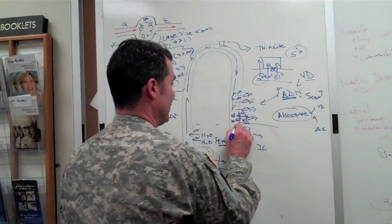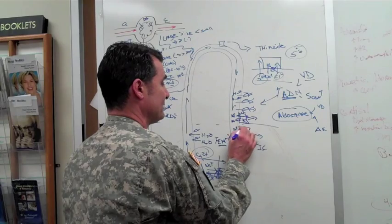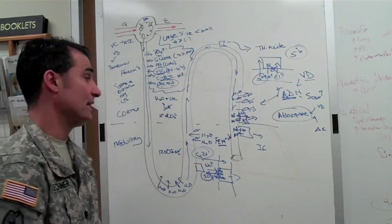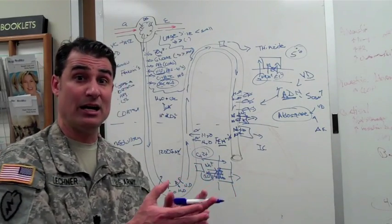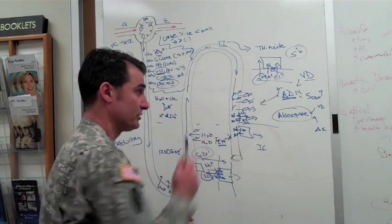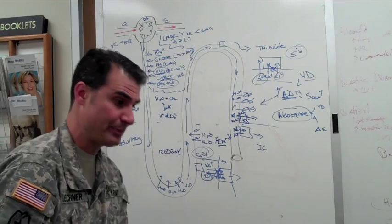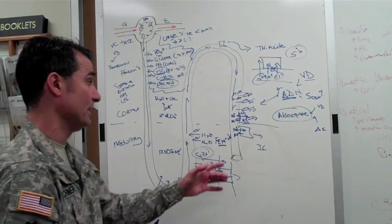So there's another ATPase pump on the luminal side which exchanges the potassium for a hydrogen ion. That hydrogen ion then gets trapped by ammonia to make ammonium in the lumen of the tubule and gets peed out. That is where you get acidification of your urine.